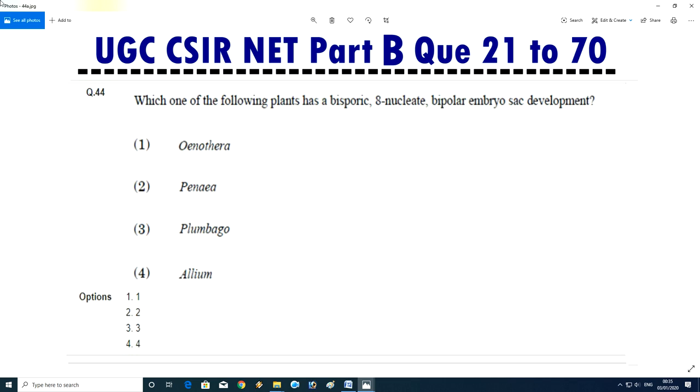Question No.45 - Which of the following plant has a bisporic 8 nucleated bipolar embryo sac development? Oenothera, Paeonia, Plumbago, or Lilium. Answer is D, Lilium, means four.